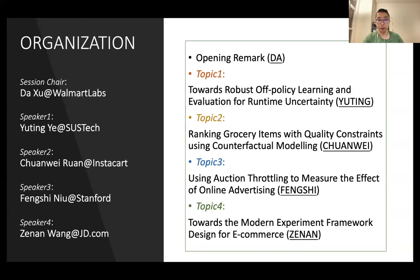After that, our third speaker, Feng Xi, from Stanford University, is going to talk about using auction throttling to measure the effect of online advertising. Our final speaker, Xinan, from JD.com, which is a leading e-commerce platform in China, is going to discuss toward a more experiment framework design for e-commerce.